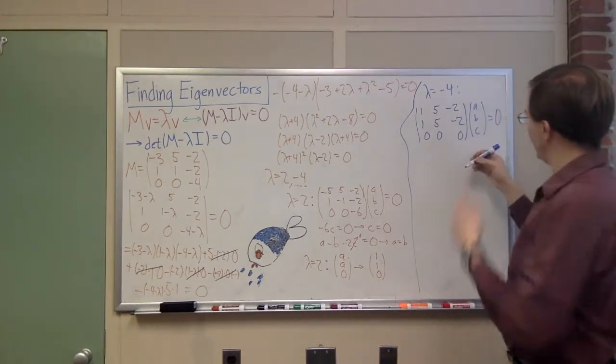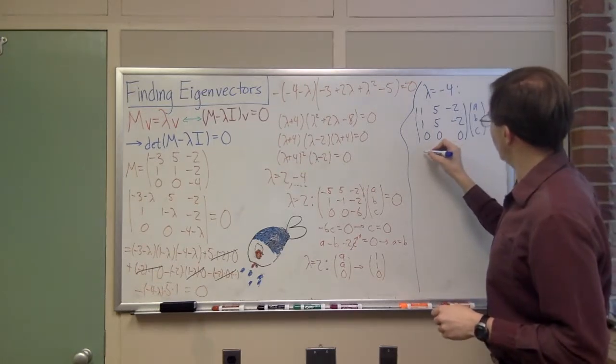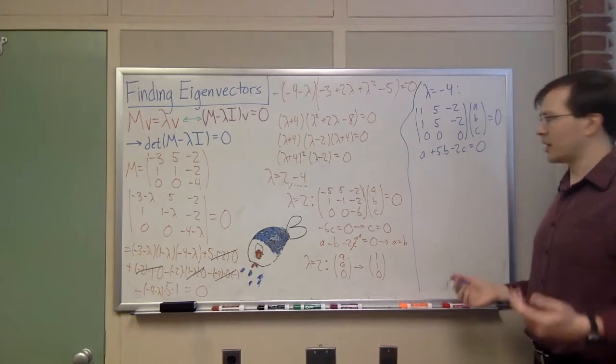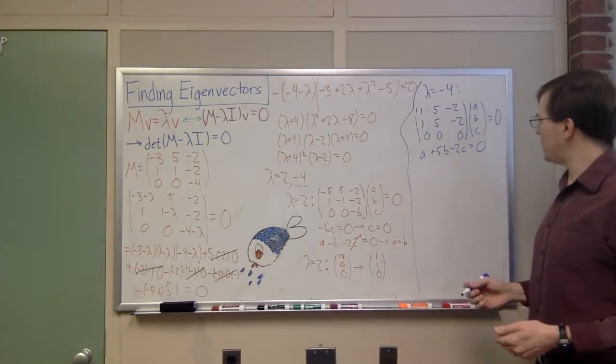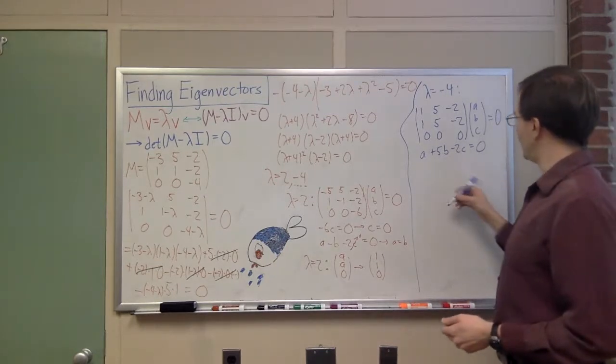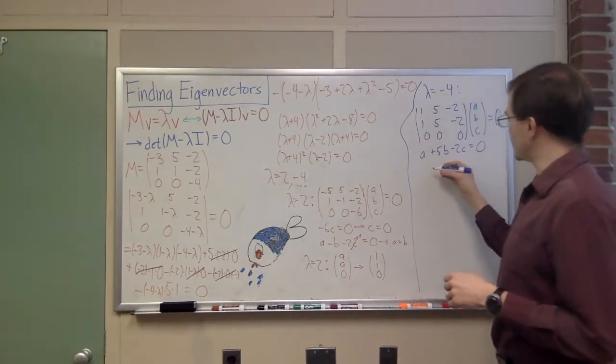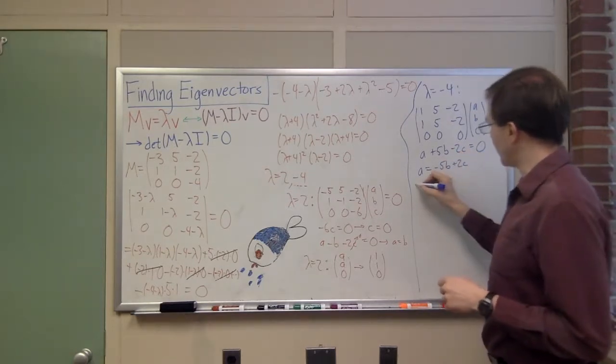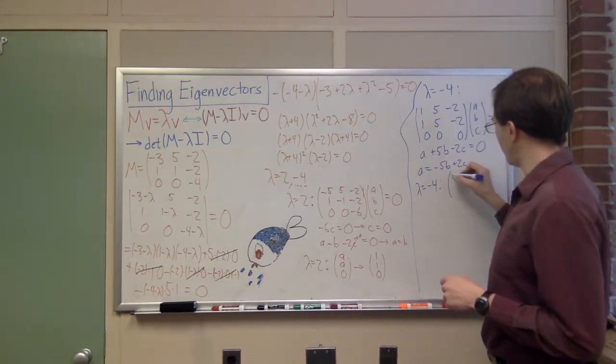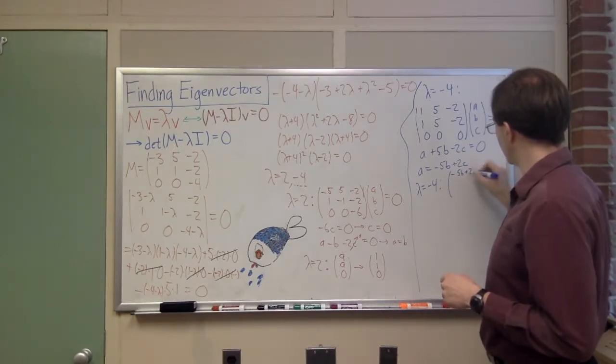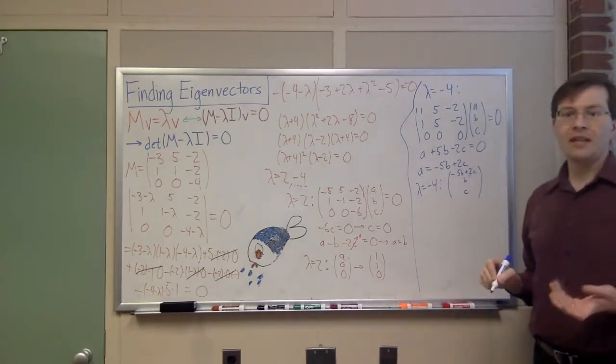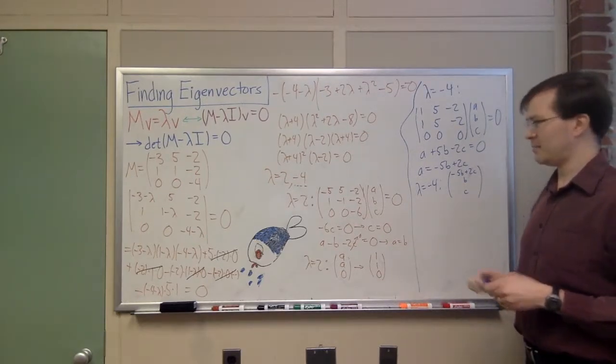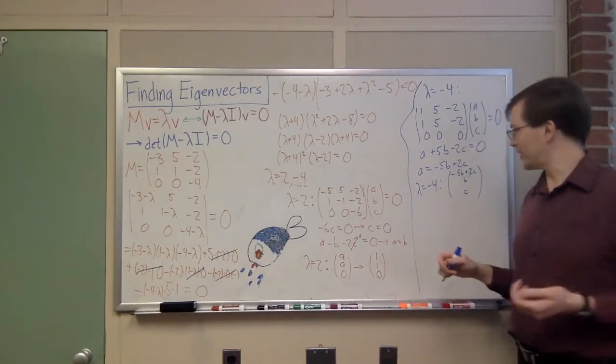All I know is that a plus 5b minus 2c equals 0. And any choices that I make within that are going to be fine. I can do this in a lot of ways. But I think, honestly, rather than doing 1/5 and 1/2, that sort of thing, I'm just going to do this the simplest way and say that my a has to be equal to -5b plus 2c. So my vectors, my lambda equals -4 eigenvectors, are any vector of the form -5b plus 2c, b, c. Any vector of that form is going to be an eigenvector of this matrix.